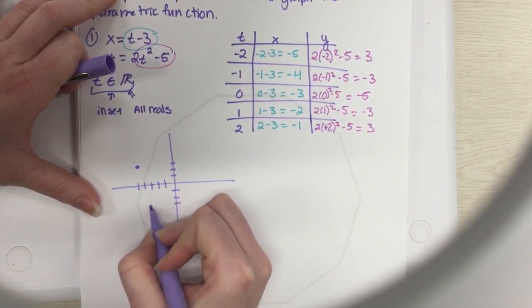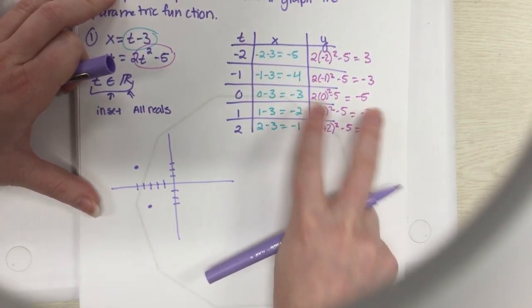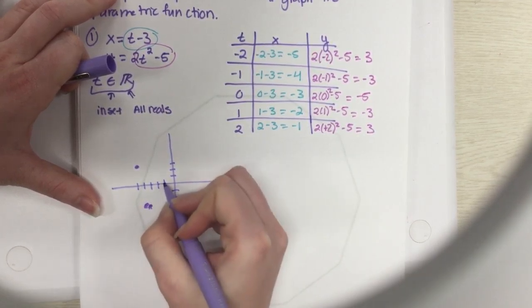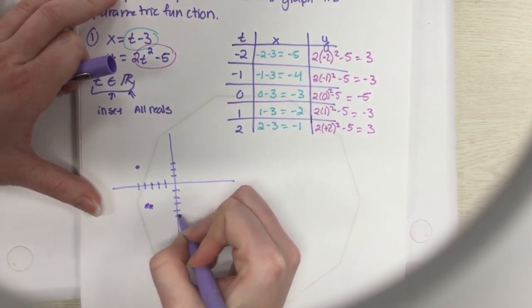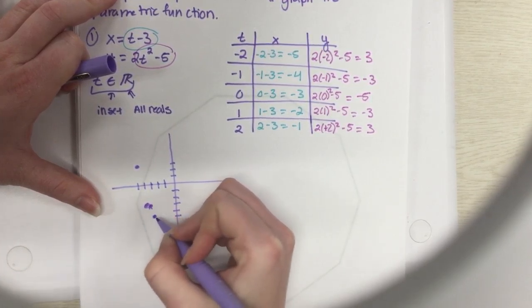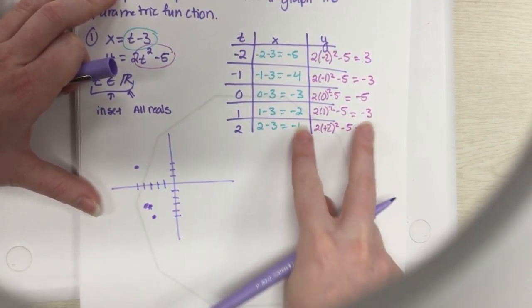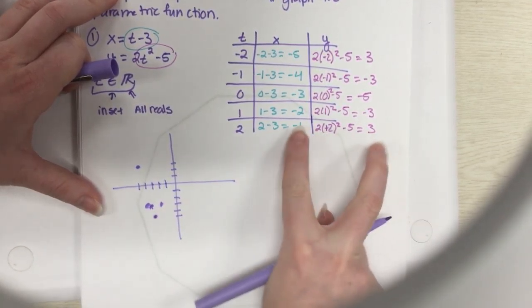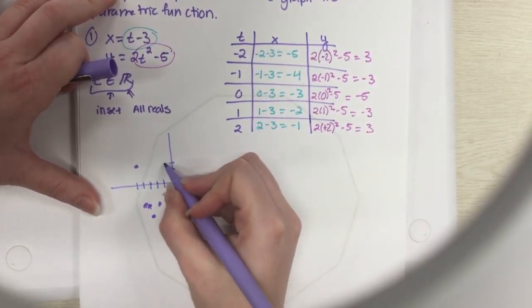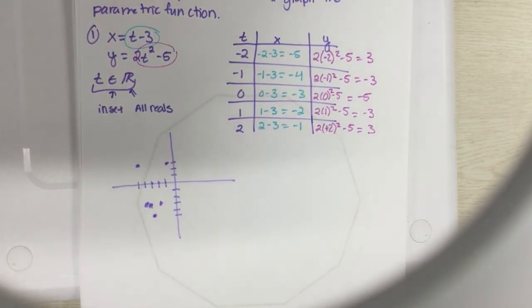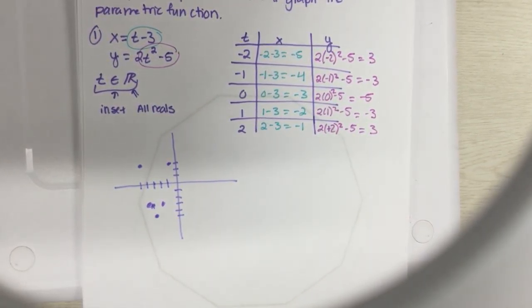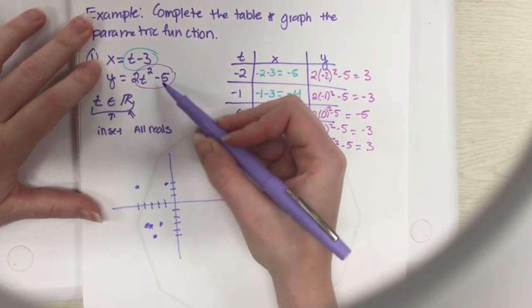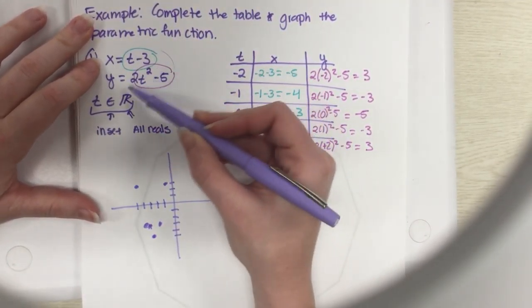And the next one's negative 4, negative 3. Next one's negative 3, negative 5. And then we got negative 2, negative 3, which is going to be right there. And then negative 1, positive 3, which is right there.